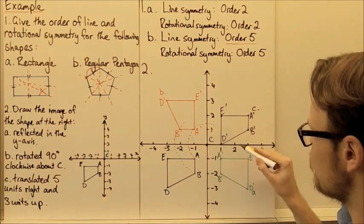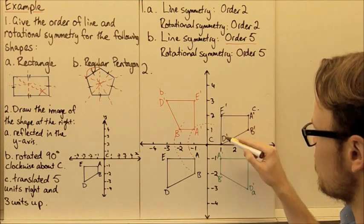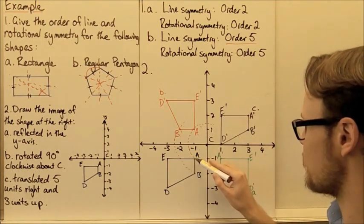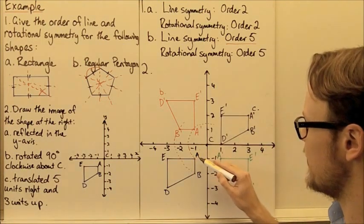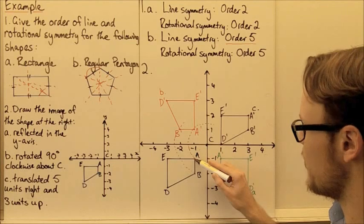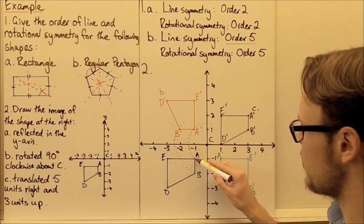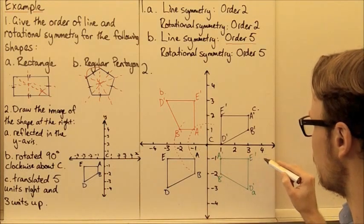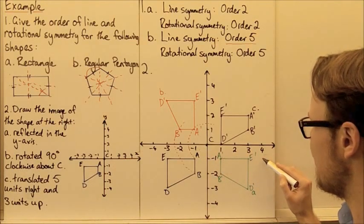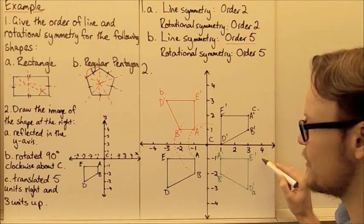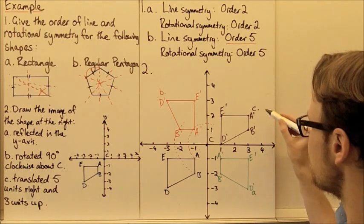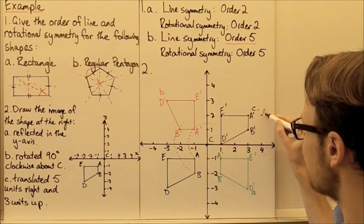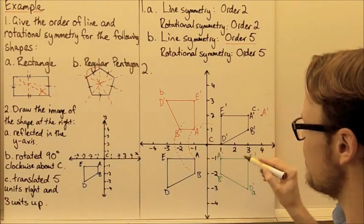So our shape shouldn't be here — we need to shift point A five units to the right and then three units up. So this is where A dash should be.